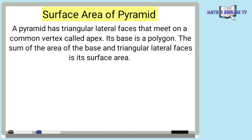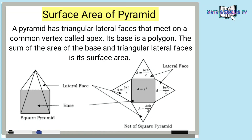Next, surface area of pyramid. A pyramid has triangular lateral faces that meet on a common vertex called apex. Its base is a polygon. The sum of the area of the base and triangular lateral faces is its surface area. Tingnan natin ang illustration ng square pyramid. Ang square pyramid, kapag tinanggal natin o i-unfold natin, makikita natin yung net of square pyramid — itong nasa kanan. Ang shapes na nandyan ay 4 triangles at isang square. Nandyan din yung formula ng pagkuha ng area ng bawat shape. Yung surface area ay ang total area ng lahat ng shapes na nandyan — kukunin muna yung area ng bawat shape, then i-plus lahat yung area nila at yung answer ay ang surface area.